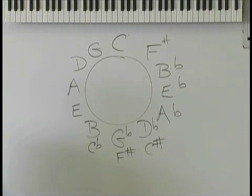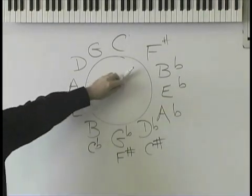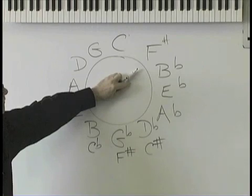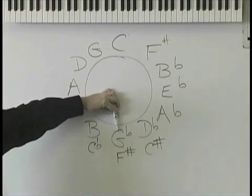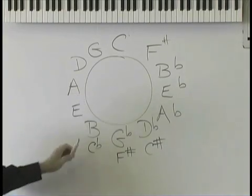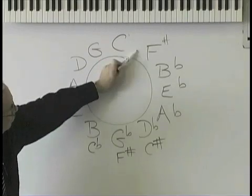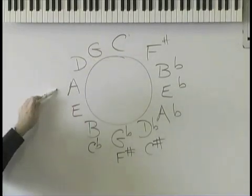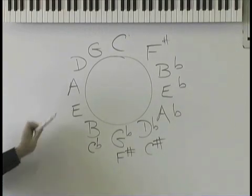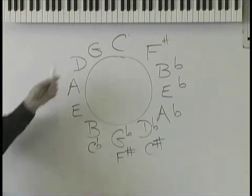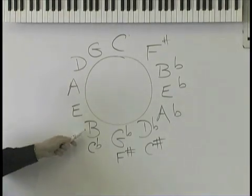I want to play in the key of F-sharp, way down at the bottom. How many sharps? Six. What are they? Go back up to the top — F, one, two, three, four, five, and six. Remember the order for sharps? Fat cats go down alleys eating birds.